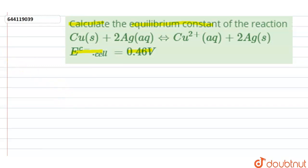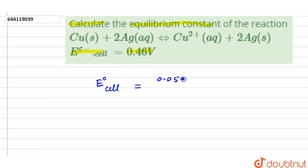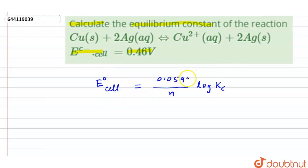The equilibrium constant of a cell reaction can be calculated by the formula: E°cell = (0.0591 / n) × log Kc. This is the formula. By the use of this formula, we can calculate the equilibrium constant. In this question, the cell reaction and E°cell are given.